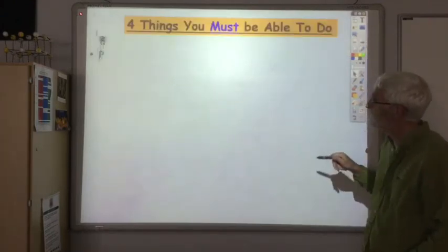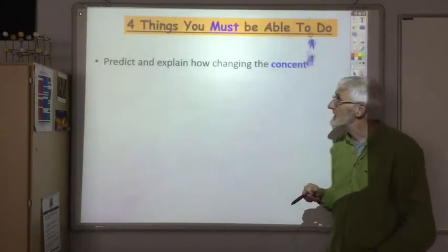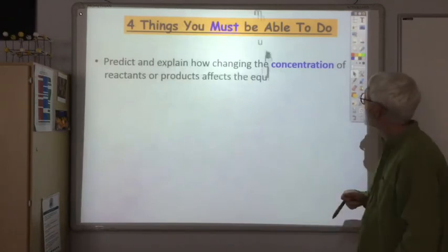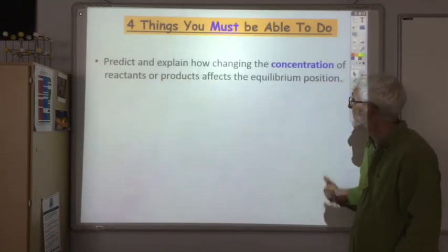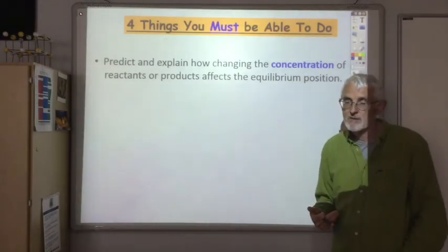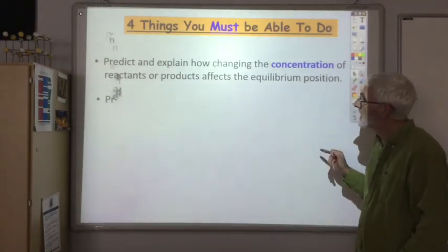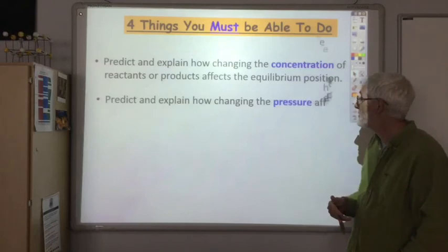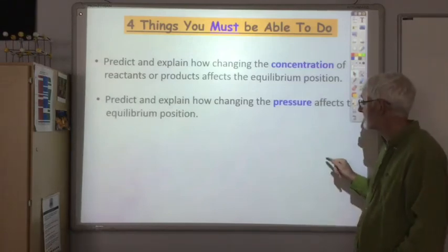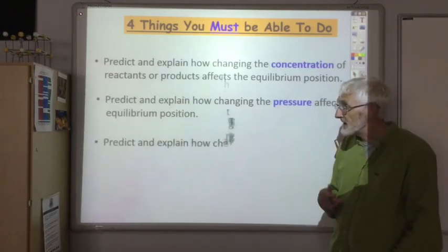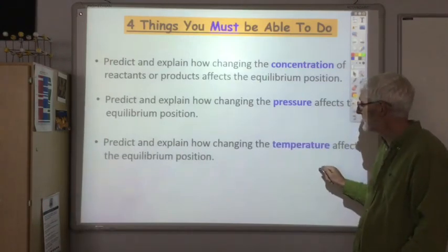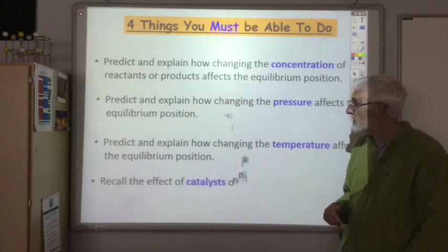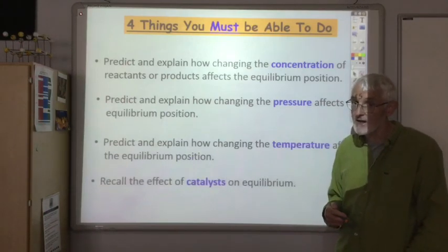Okay, so four things you must be able to do. One, predict and explain how changing the concentrations of reactants or products can affect the equilibrium position. Predict and explain how changing the pressure can affect the equilibrium position. Predict and explain how changing the temperature can affect equilibrium position. And recall the effect of catalysts on equilibrium.